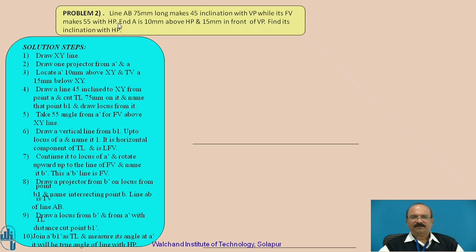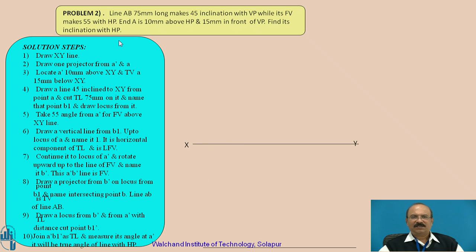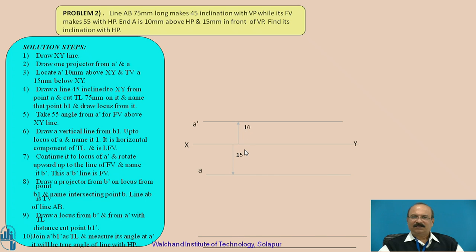First, always start with the XY line. After drawing the XY line, you are expected to locate point A: 10 millimeters above the HP and 15 millimeters in front of the VP — that is, 10 millimeters above the XY line and 15 millimeters below the XY line. You will be locating this as A-dash and A respectively.